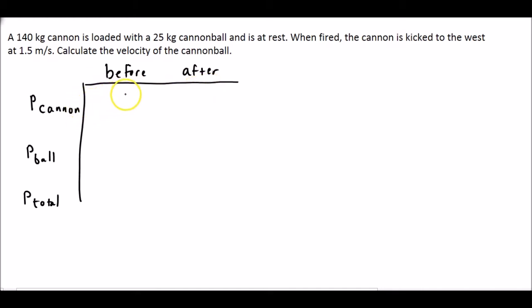This one's easy because they're not moving, so the momentum is zero before for everything. We know this because momentum is mass times velocity, and since velocity is zero, anything times zero is zero.